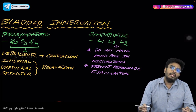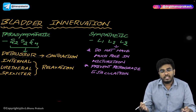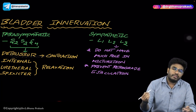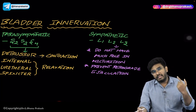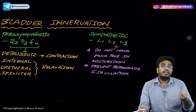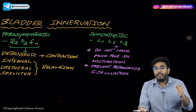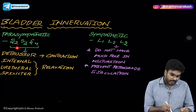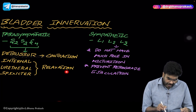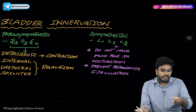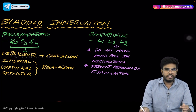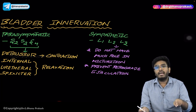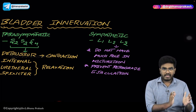These parasympathetic fibers also innervate the internal urethral sphincter. The internal urethral sphincter is involuntary — not under voluntary control. There is also an external urethral sphincter, which is under voluntary control; you can withhold urine by contracting it. The internal urethral sphincter is innervated by S2, S3, S4, which helps in its relaxation, facilitating micturition. During micturition, the bladder contracts while the internal urethral sphincter relaxes.